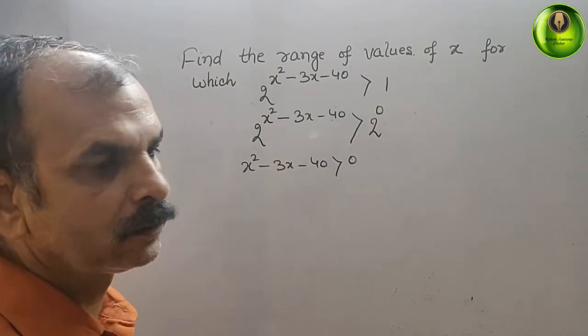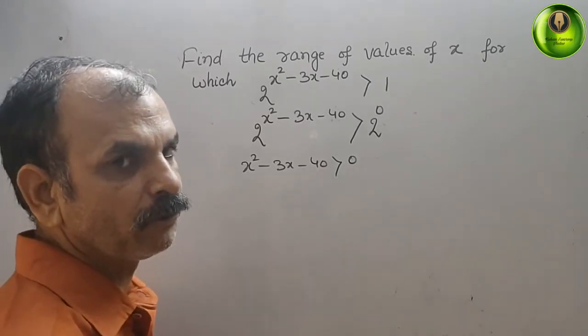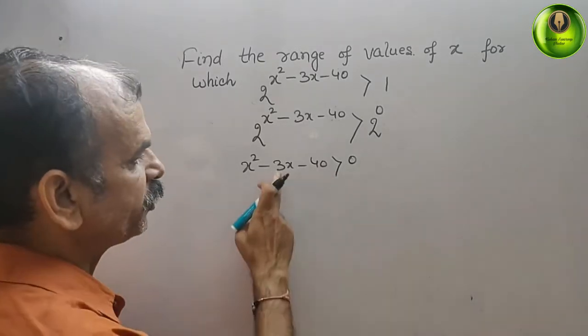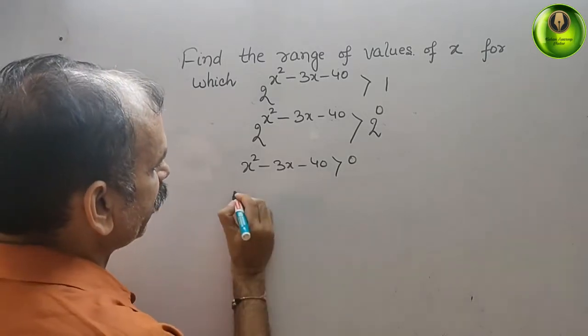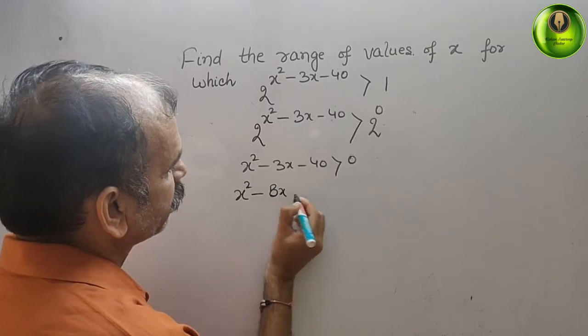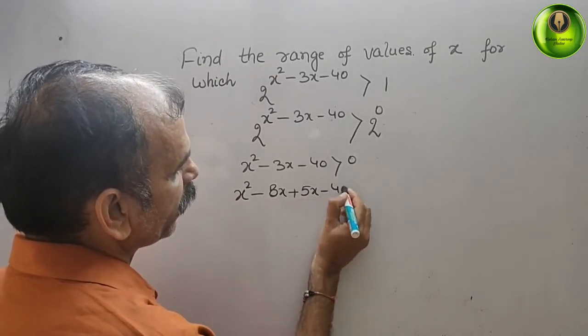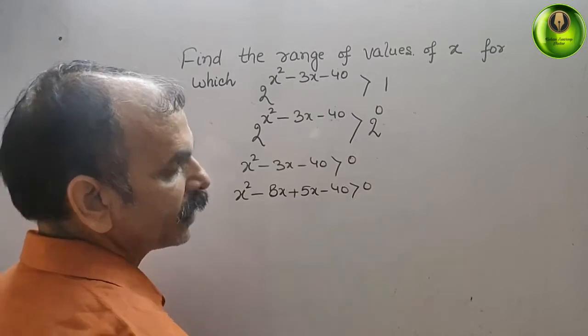Go for a middle term splitting, what we will get? 40, 8 into 5, 8 minus 5 is 3 also. Therefore, we will write here x square minus 8x plus 5x minus 40, that is greater than 0.